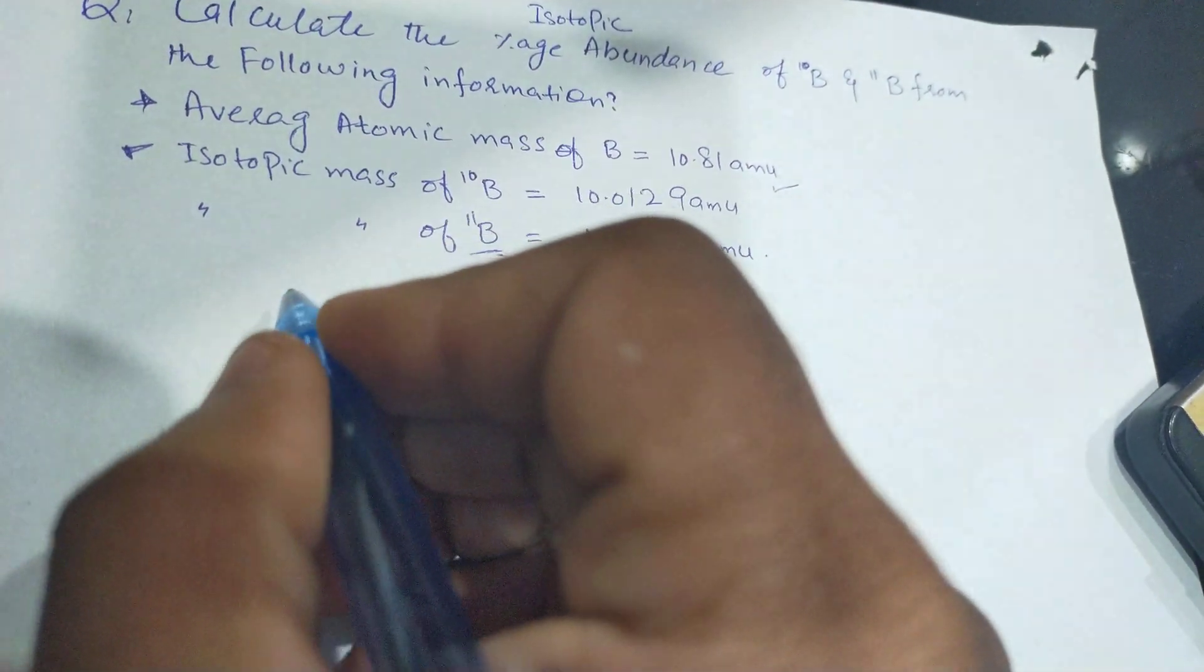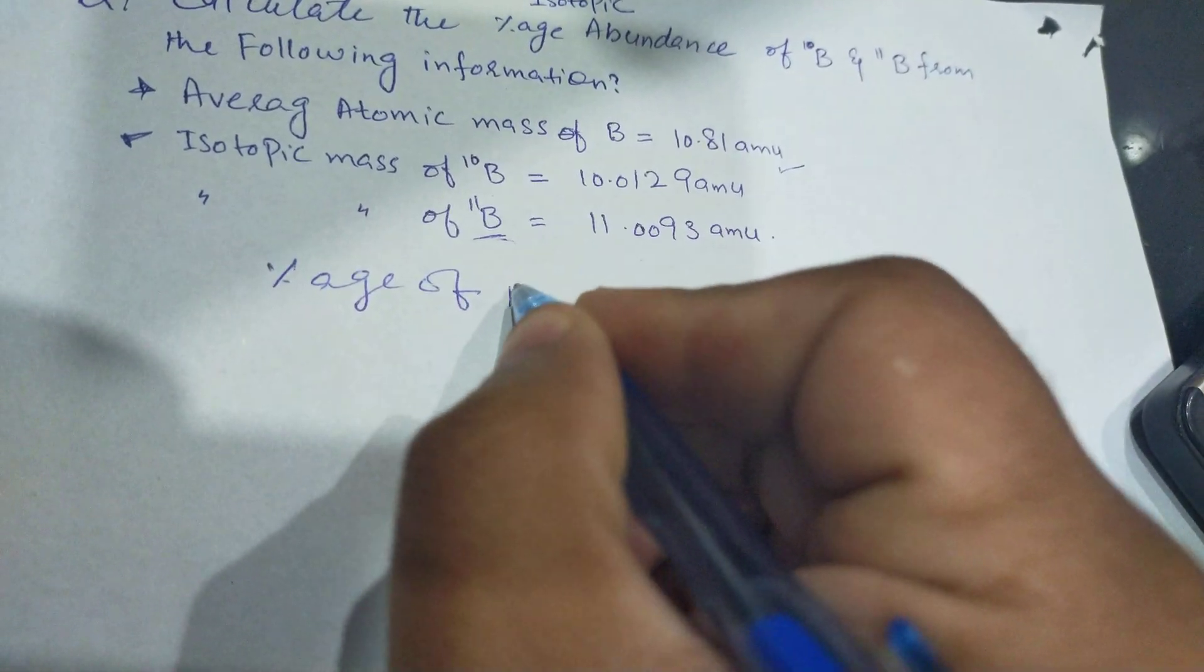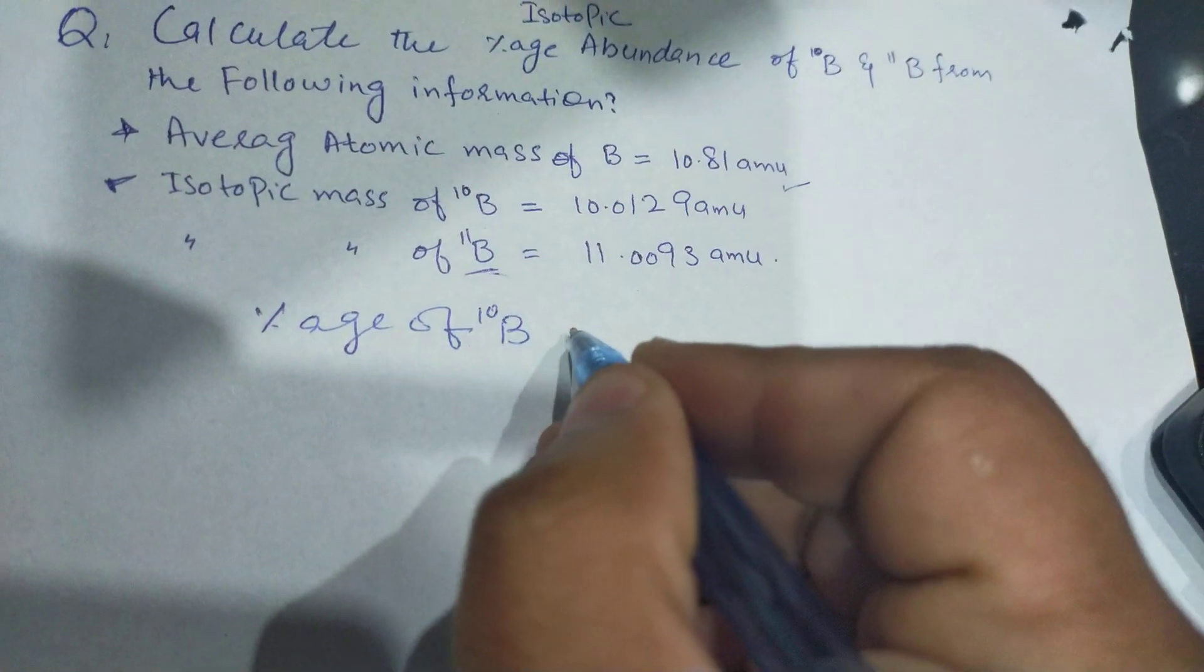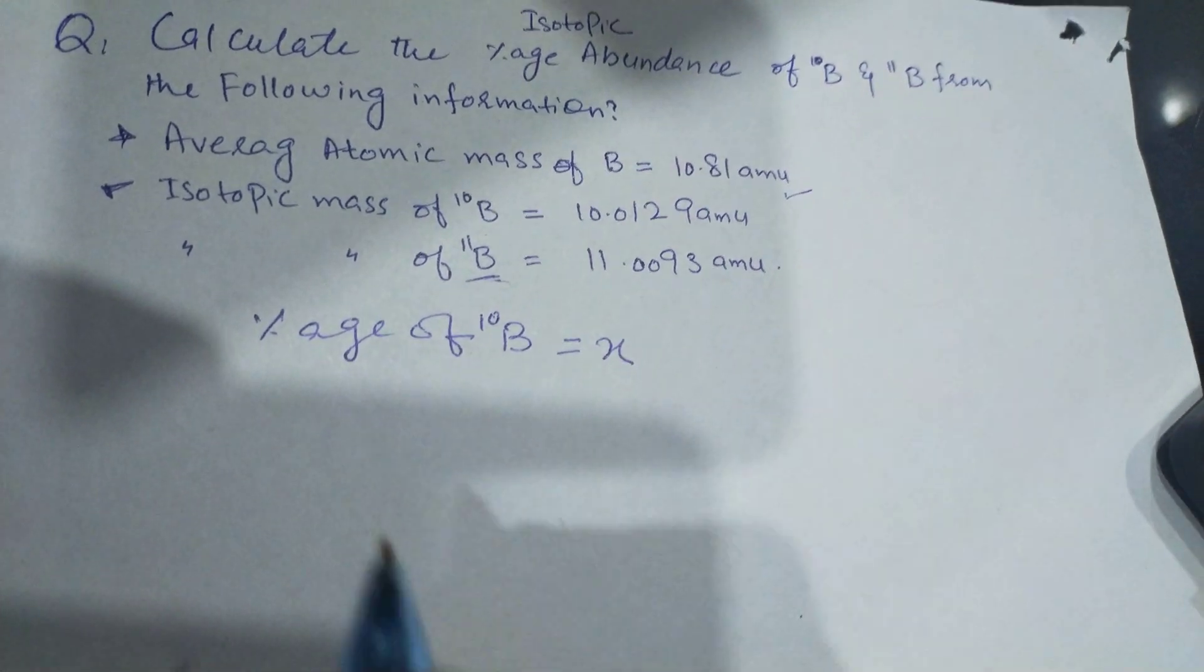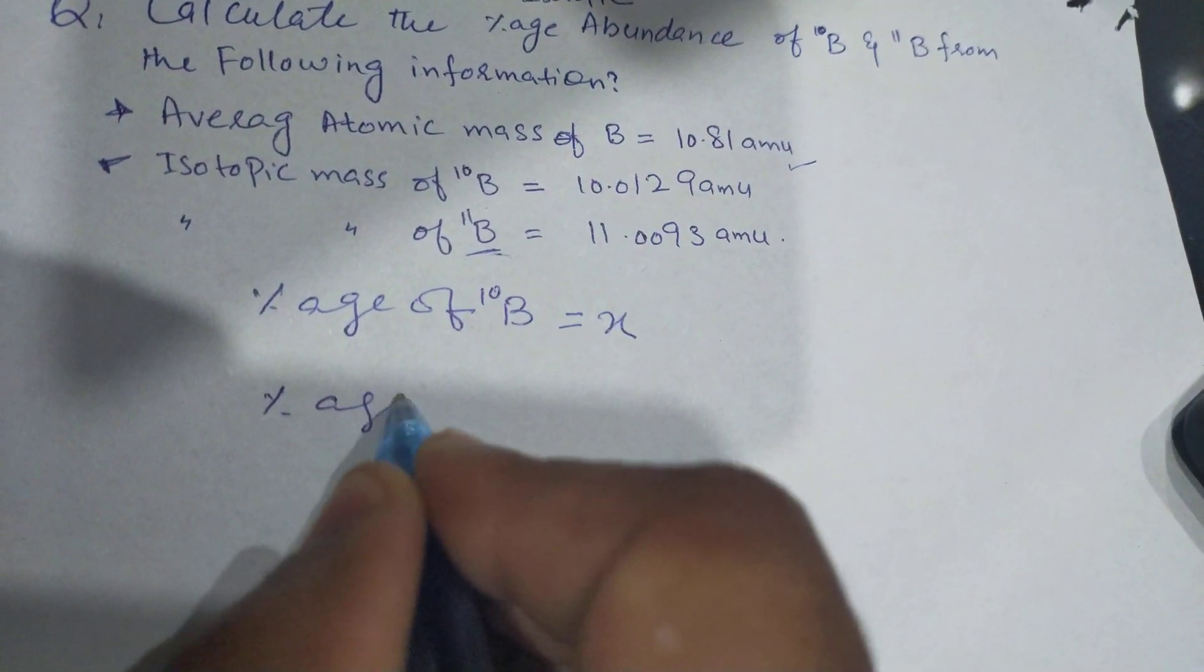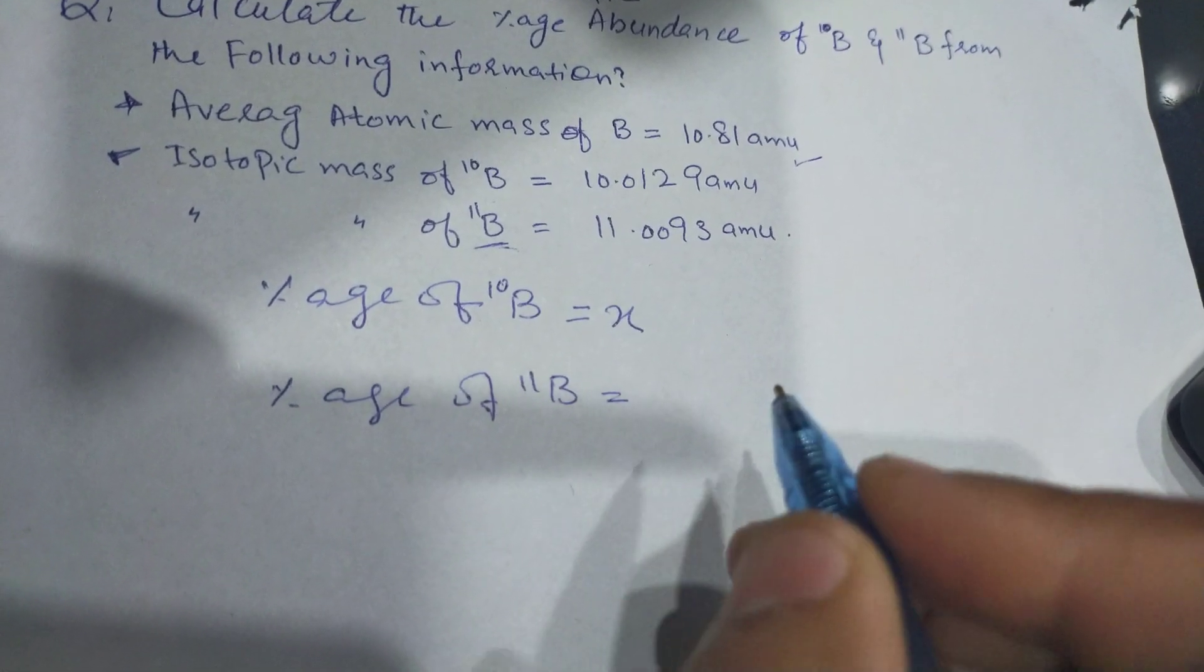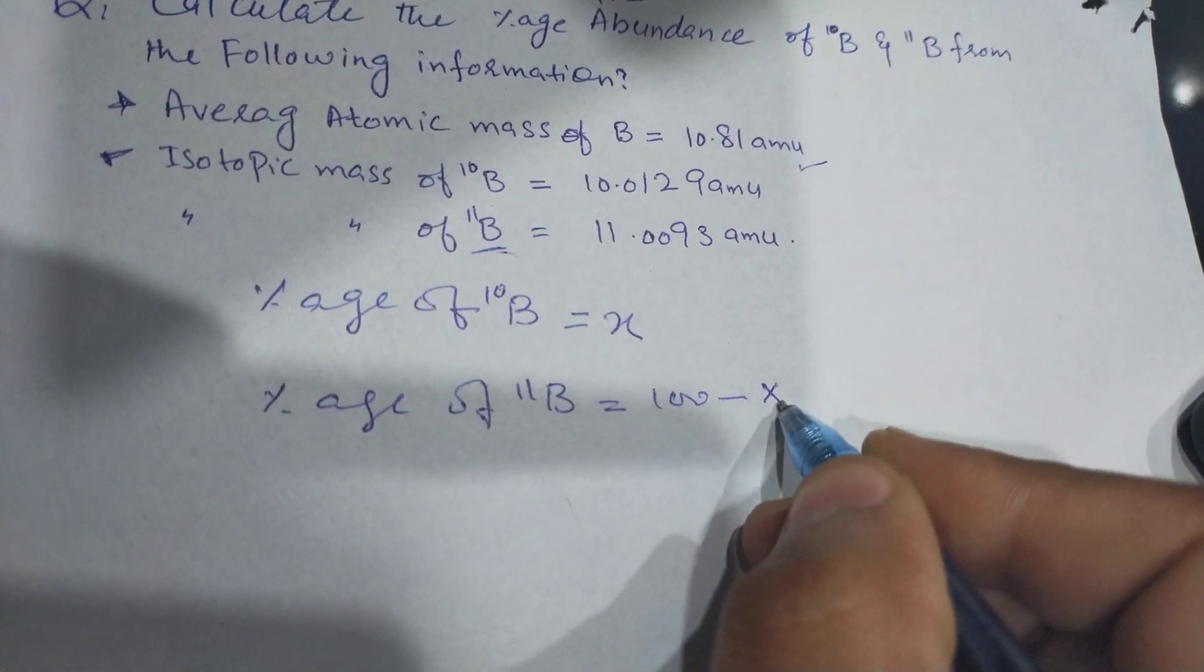To calculate the abundance of isotopes, let's consider the percentage of Boron-10 is equal to X. Percentage of Boron-11 isotope is equal to 100 minus X.